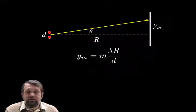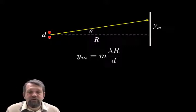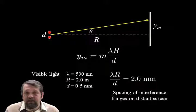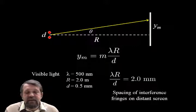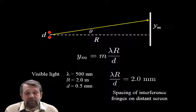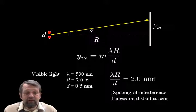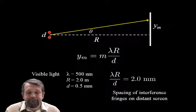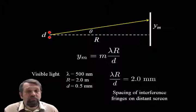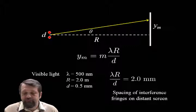Suppose we do an experiment with visible green light of wavelength about 500 nanometers, with a distance r of 2 meters between the slits and the screen, and a slit separation d of half a millimeter. Then the fringe spacing λr/d works out to about 2 millimeters. So there will be a spot of light separated by darkness every 2 millimeters laterally across the distant screen. That's the spacing of the interference fringes.